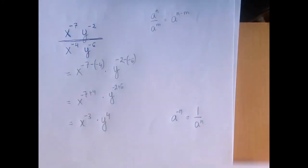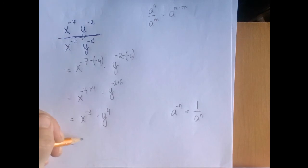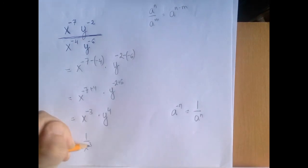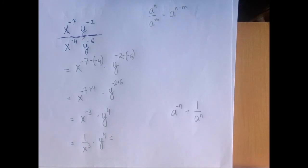So what we have is 1 over x cubed times y to the fourth, which is the same as y to the fourth over x cubed.